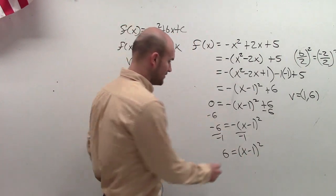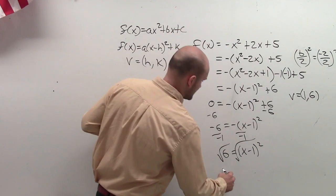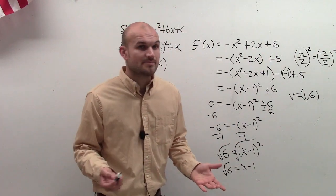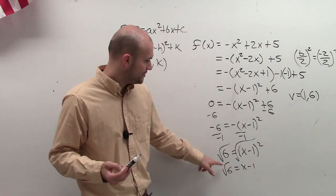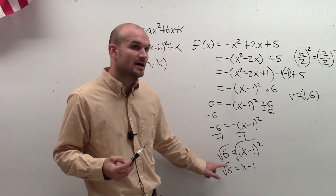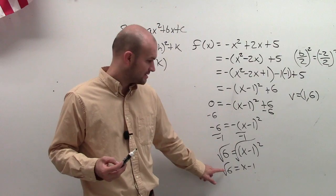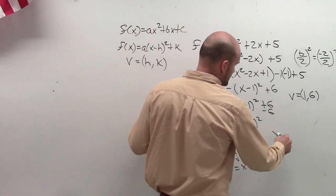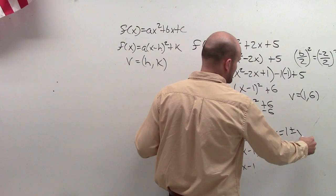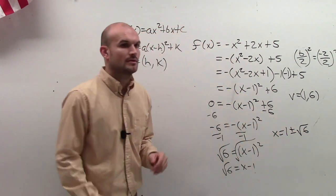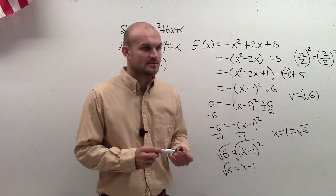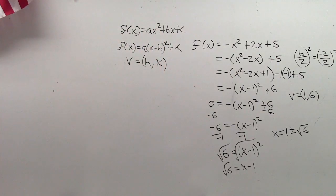Now I undo the squaring function. So I square root, and I get √6 = x - 1. The other mistake a lot of students made is to remember that when you have √6 = x - 1, make sure that you take in the plus and minus of the square root of 6. So my final answer is going to be x equals, I add the 1 to the other side, 1 ± √6. And that's your final answer. X-intercepts, vertex. Perfect timing.